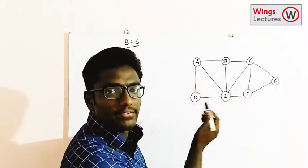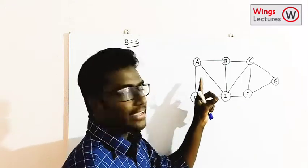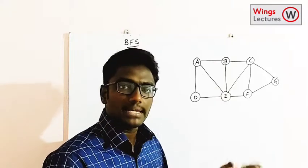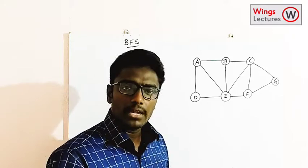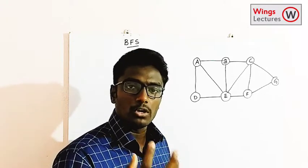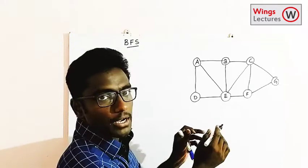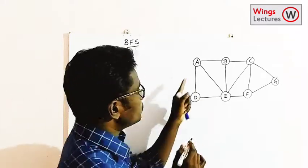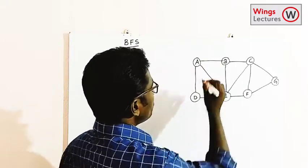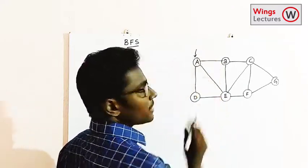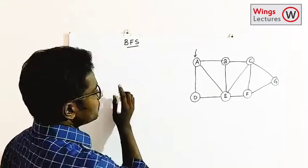Here no vertex is marked as the starting vertex, so you can choose any node as your starting vertex. If they give you a particular node you must start from that node. Since none is specified, I'm going to choose A as my starting vertex.